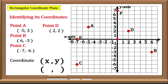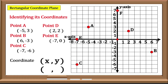Let us try Point E. Create a vertical line along the X-Axis from the given point, which is negative 7, and a horizontal line along the Y-Axis from the given point, which is 0. So therefore, the coordinates of Point E are negative 7, 0.